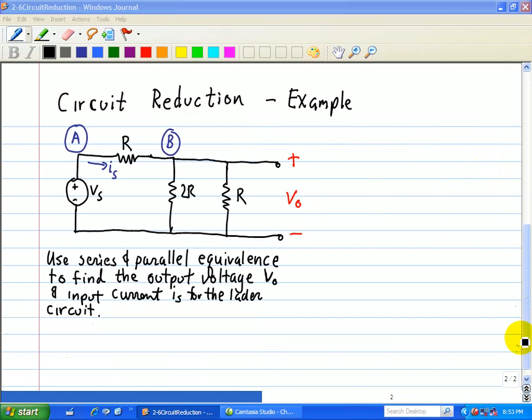So let's analyze this ladder circuit using series and parallel equivalents to find this output voltage V0, as well as the current IS, our input current IS here.